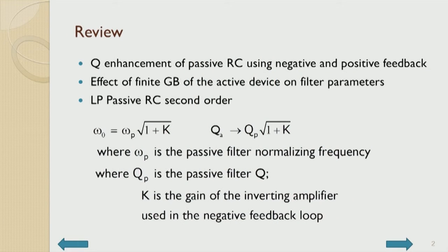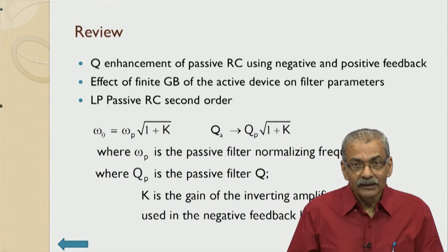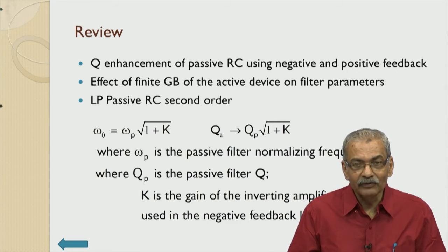Let us start with what we have done in the earlier, 26th lecture. Q enhancement of passive RC using negative and positive feedback was the topic of discussion, because the passive RC network was using low Q blocks — it cannot increase the Q above half, as we had shown. We also discussed how to improve the Q above half for a variety of designs required in filters.